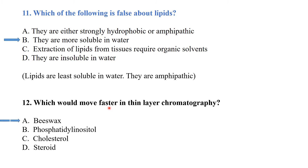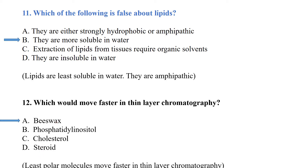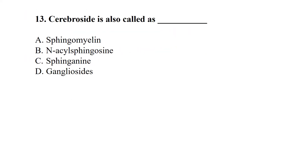Q12: Which molecule would move faster in thin layer chromatography? Beeswax moves faster in TLC because less polar molecules move faster. Q13: Cerebroside is also called sphingomyelin.